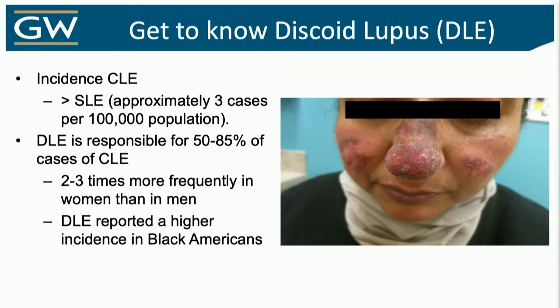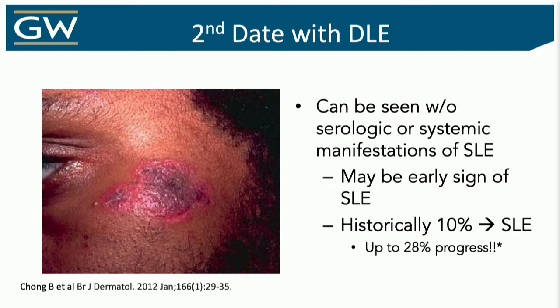The incidence of cutaneous lupus is actually greater than that of systemic lupus, which I guess is a good thing. DLE, which is a chronic cutaneous lupus, makes up more than half of all cases we're going to see. It's more frequent in women than men, and possibly higher in certain demographics like those who identify as Black. You can see this in just skin alone — there are many patients who just have skin disease, and it doesn't mean it's any less disabling.